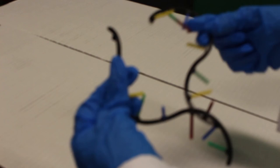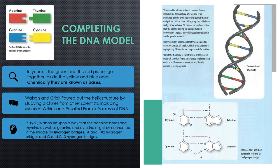Watson and Crick were able to figure out the helix structure by studying pictures from other scientists, including Maurice Wilkins and Rosalind Franklin's x-rays of DNA. In 1953, Watson figured out how adenine bases and thiamine, as well as guanine and cytosine, could be connected with hydrogen bridges.